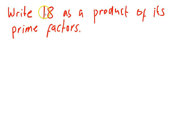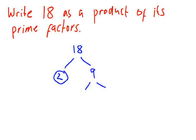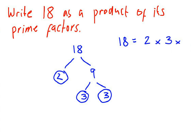This time the question is asking us to write 18 as a product of its prime factors. I'll start by writing 18 at the top, then do two branches of the factor tree with any two factors of 18. I'll start with 2 and 9. 2 is a prime number so we circle that and that branch ends. 9 is not prime so we carry on: 3 and 3, both of which are prime, so our factor tree is complete. We can write 18 as 2 times 3 times 3, and underneath that as 2 times 3 squared.